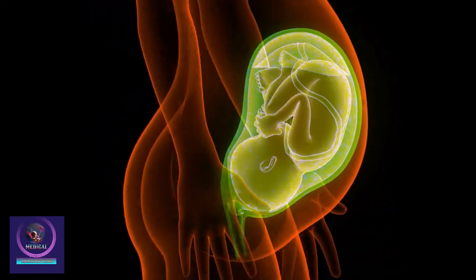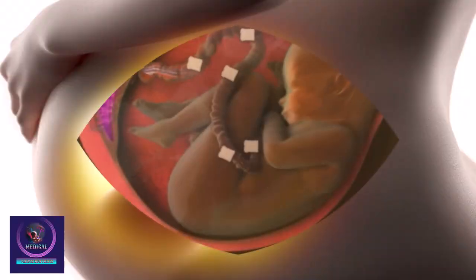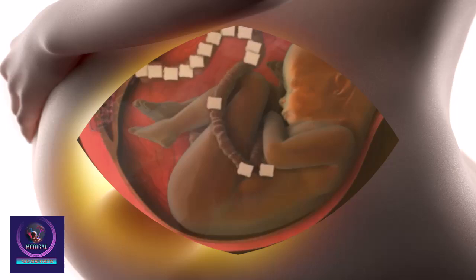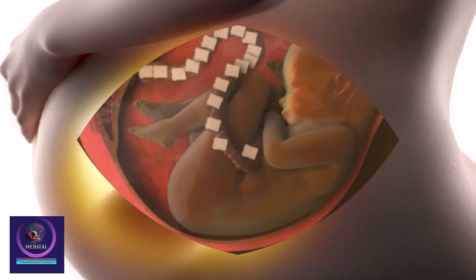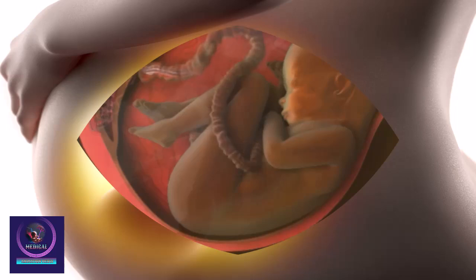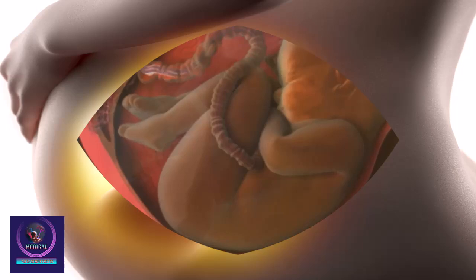So what happens to the fetus if the mother has gestational diabetes? Glucose crosses the placenta to the fetus so that the fetus has energy to grow. But if there is too much glucose in the mother's blood, a higher amount of glucose also goes to the fetus. To cope with the higher levels of glucose, the fetus produces extra insulin, which can make the fetus larger and fatter than normal. The baby may even need to be delivered early because of its size. Gestational diabetes usually disappears after the baby is born.